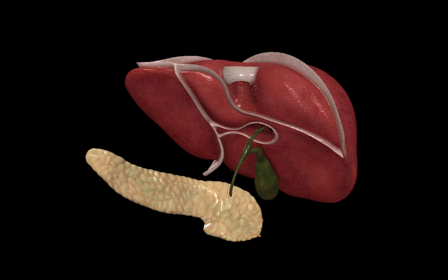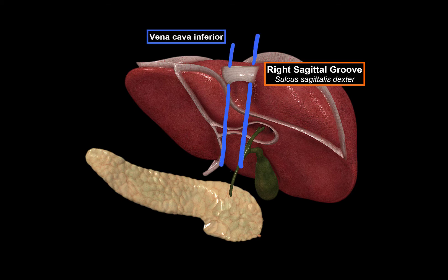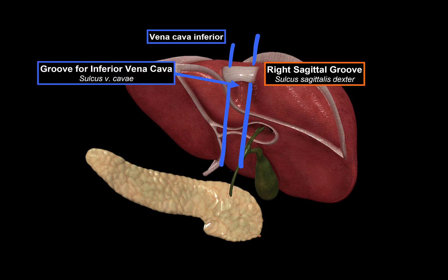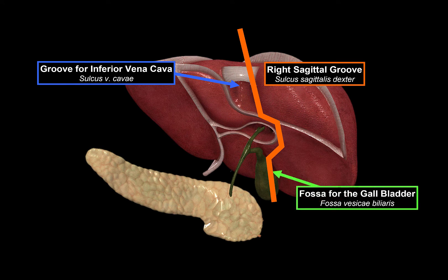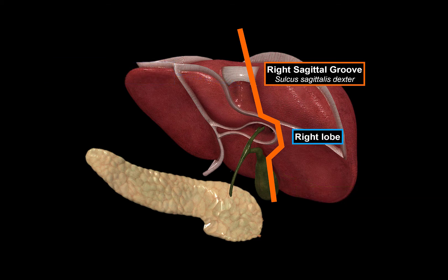Looking at the liver posteriorly, we have three important grooves on the posterior surface. The first is the right sagittal groove, which is formed by two other grooves on the visceral surface of the liver. Imagine the inferior vena cava running in this direction, forming the groove for the inferior vena cava. The right sagittal groove is formed by the fossa for the gallbladder down here and the fossa for the inferior vena cava. It separates the right lobe from all other lobes on the posterior view of the liver.